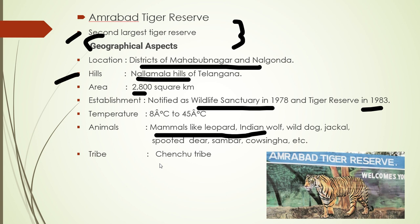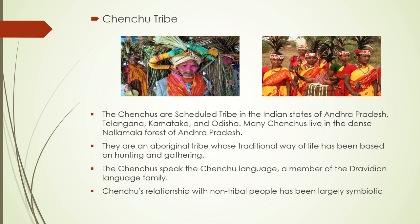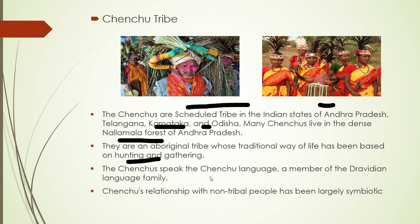The Chenchu tribe are scheduled tribes found in Indian states including Telangana, Andhra Pradesh, Karnataka, and Odisha. They are mainly found in the Nallamalla forest of Andhra Pradesh. Their livelihood is based on hunting and gathering. Their language is Chenchu language, and in Telangana the language is Telugu — both belonging to the Dravidian family.